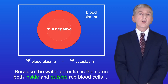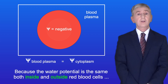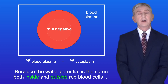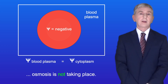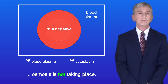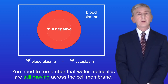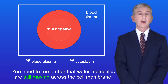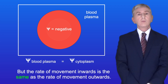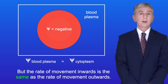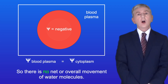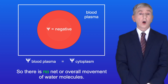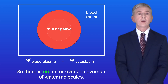Because the water potential is the same both inside and outside red blood cells, osmosis is not taking place. Water molecules are still moving across the cell membrane, but the rate of movement inwards is the same as the rate of movement outwards, so there's no net or overall movement of water molecules.